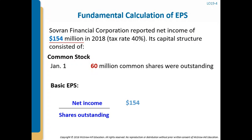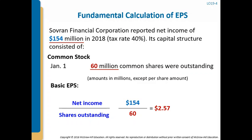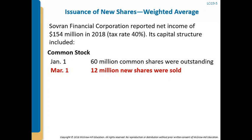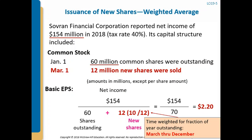So here you've got a basic EPS. We looked at this example where on March 1, an additional 12 million shares are sold. In this case, you've got shares that were outstanding 10 months out of the year. So you take and multiply 12 million shares times 10 twelfths, and add that number — which is 10, the weighted average — and 60 that are outstanding all year.